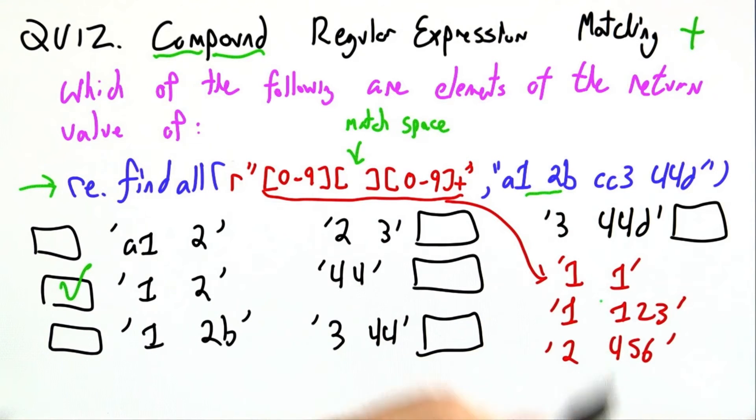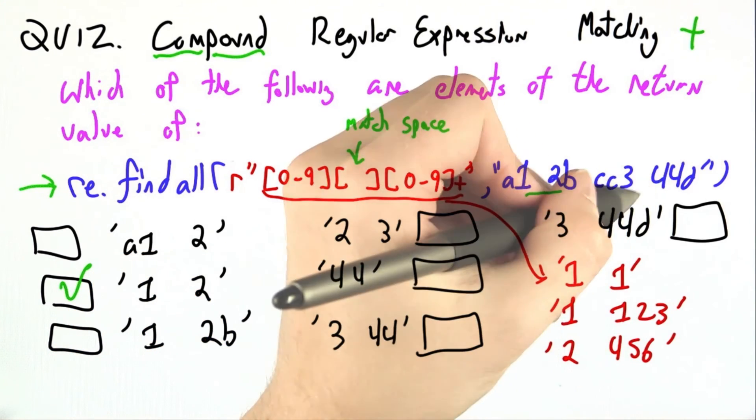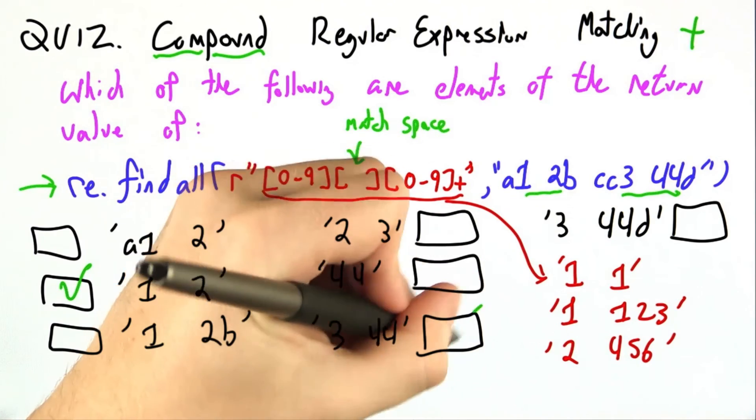44. This has the wrong format. We need a space in the middle. 3 space 44. This has the right format. It matches our regular expression, and it actually occurs in the string. Great.